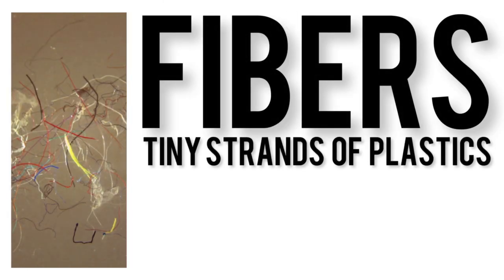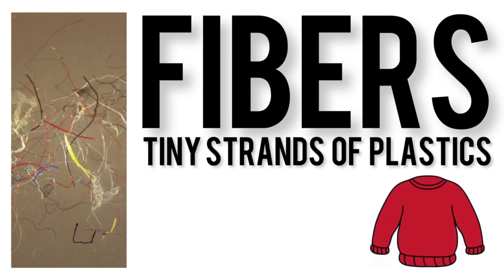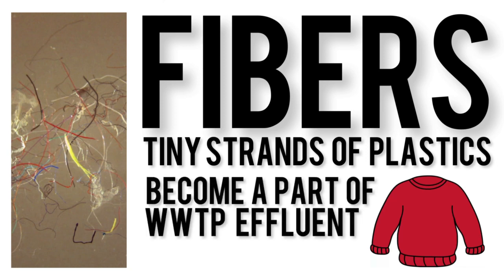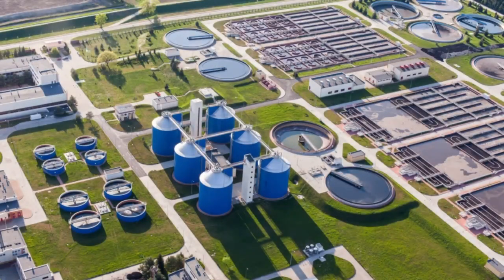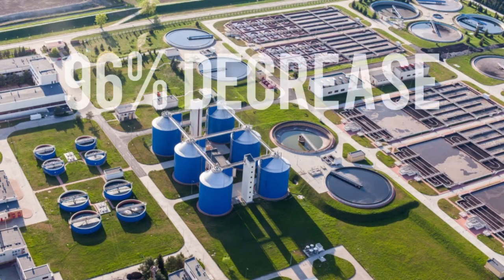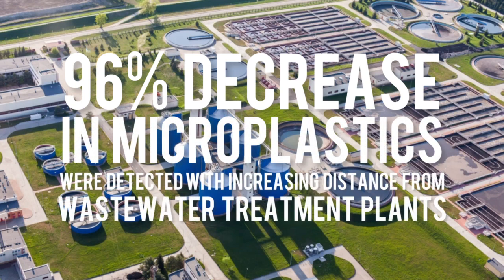Fibers are tiny strands of plastics that are often derived from clothing. These typically enter our water supply after being washed in a washing machine and become a wastewater treatment plant effluent as well. While measures are taken at these facilities to filter out microplastics or other debris, not all are caught by the system. In a study done by Maria Cazor, a 96% decrease of microplastics was detected with increasing distance from wastewater treatment plants.